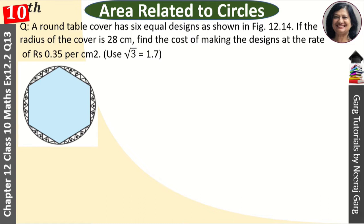We have this round table cover given with this design made. This area we have to remove. We have the radius given: R is equal to 28 centimeters.